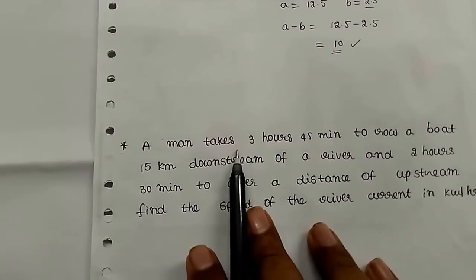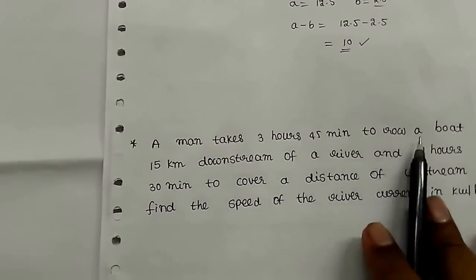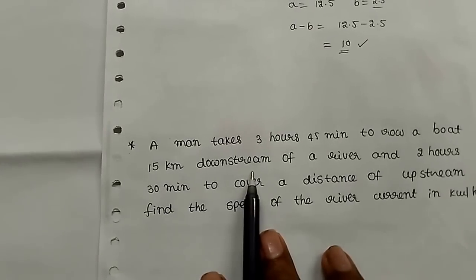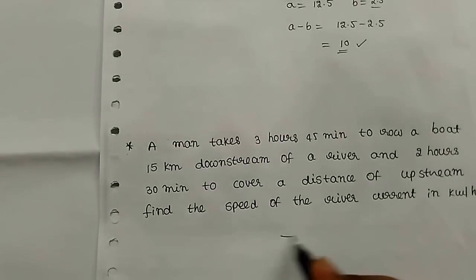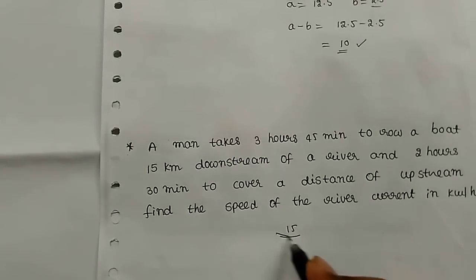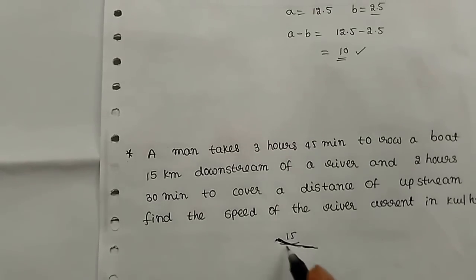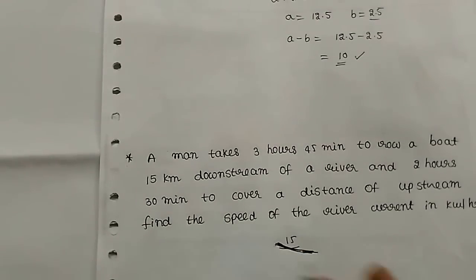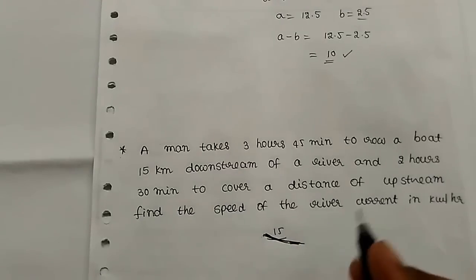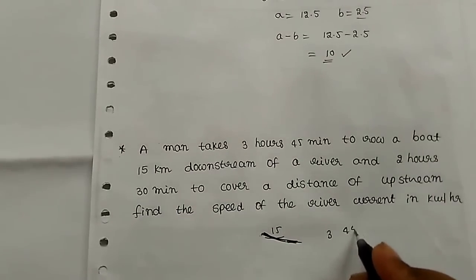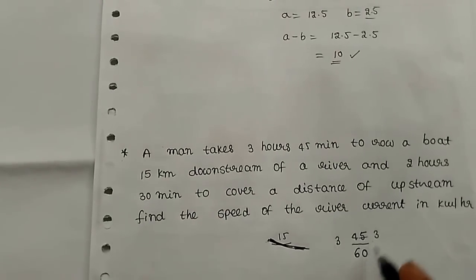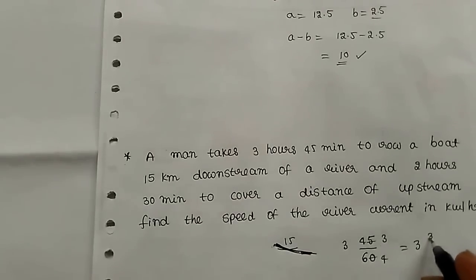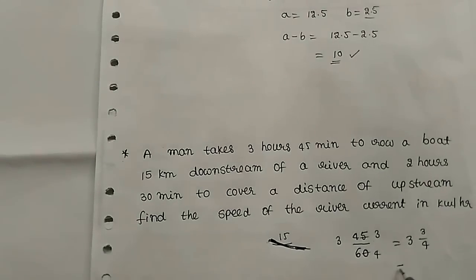A man takes 3 hours 45 minutes to row a boat 15 km downstream. Distance is 15 km, and this is downstream. The time is 3 hours 45 minutes — convert 45 minutes: 45 by 60. Mixed number: 4 times 3 is 12, plus 3 is 15, giving 15 by 4 hours.